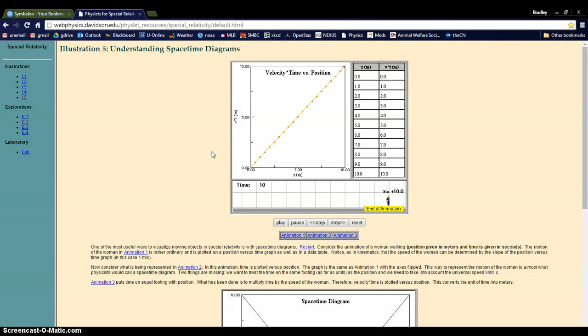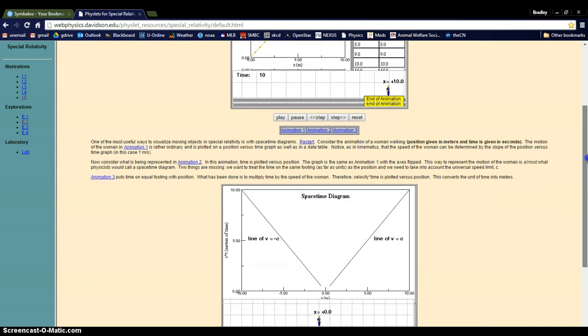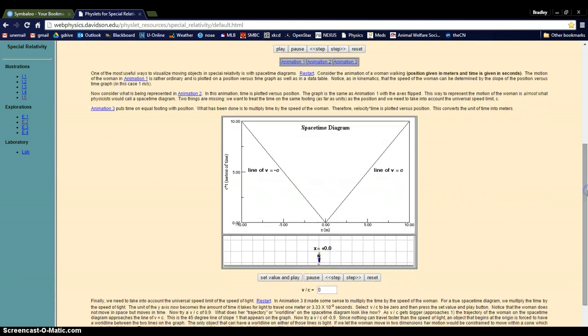But we're going to see how this is going to be a useful way of looking at things, where, first of all, a space-time diagram takes this idea of time and says this is actually a spatial dimension. It's not any different than the other spatial dimensions. It's now a velocity times a time to make it a spatial dimension.